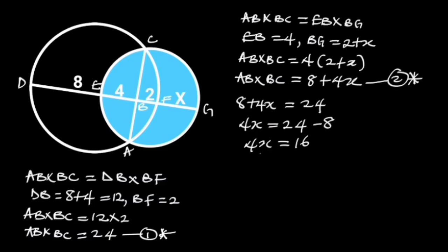Next, we divide through by 4. 4 will cancel out 4, and 16 divided by 4 is 4. Hence, x is equal to 4 units.